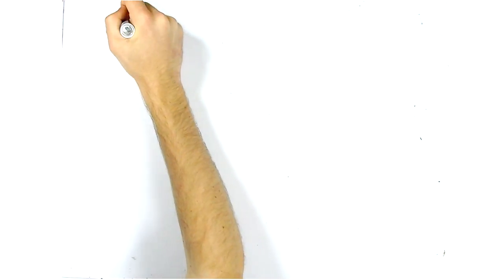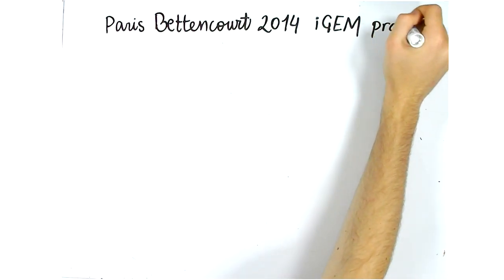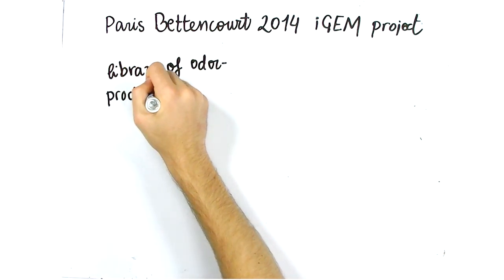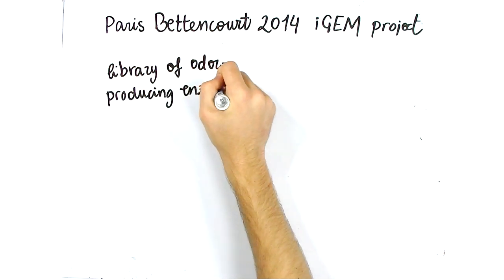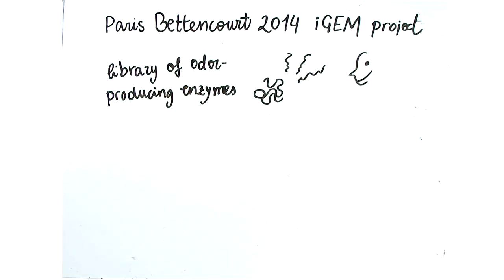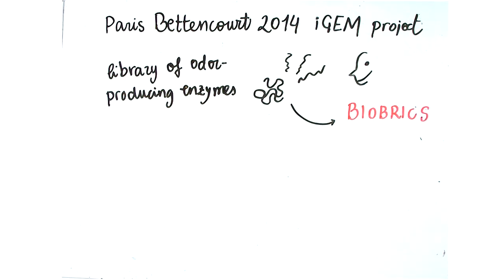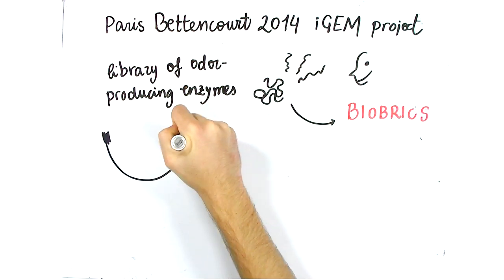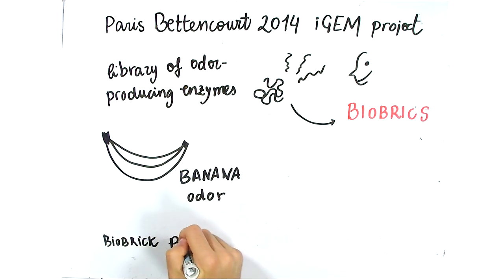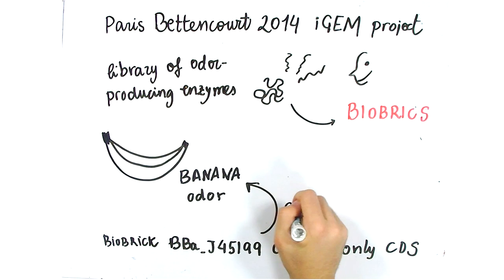Let us look at an example from the Paris Bettencourt 2014 iGEM team's project. One of the sub-projects aimed to create a library of odor-producing enzymes. In order to do this, we created several plasmid constructs using standard biobrick parts from the registry of standard biological parts. One of the odors we were trying to produce was that of a banana. To do this, we found a biobrick which contains a sequence of an enzyme that makes the smell of bananas.